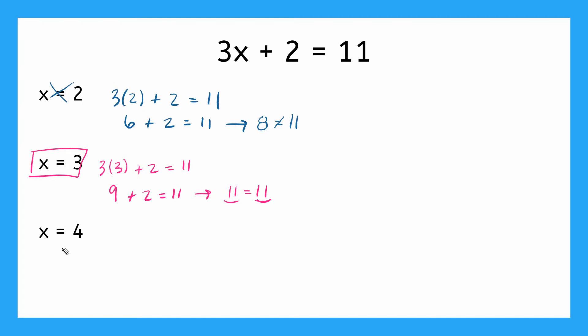But let's do this last one, x equals 4, just to make sure that it's not a solution. So we use substitution, we have 3 times 4 plus 2 equals 11. I multiply, I get 12 plus 2 equals 11.